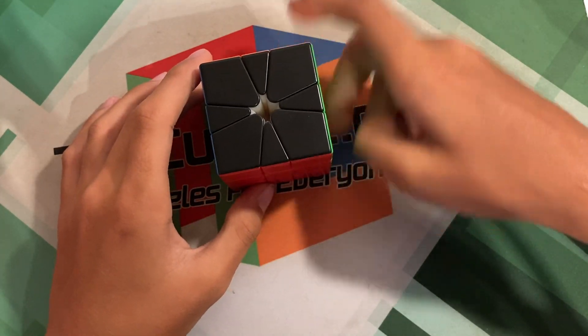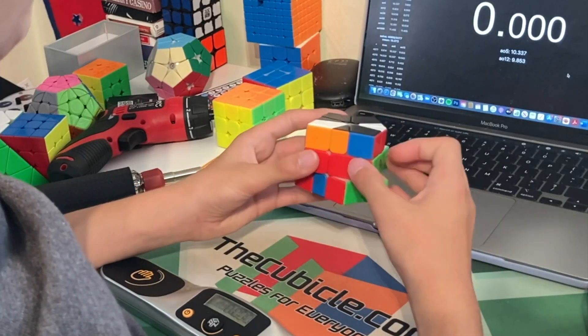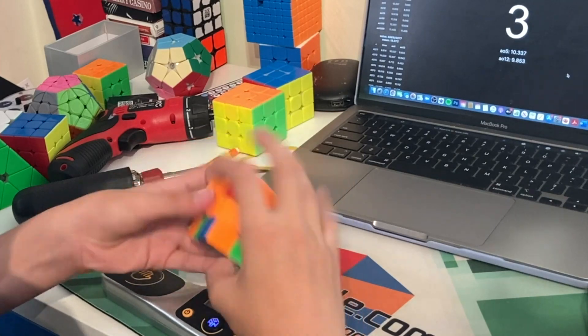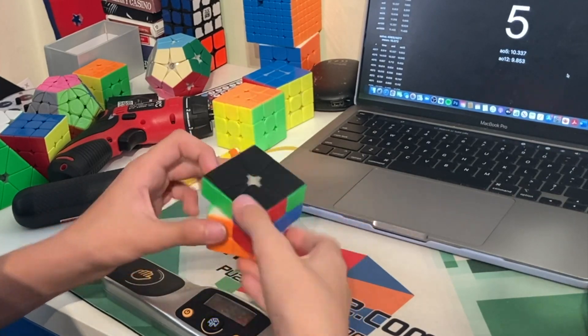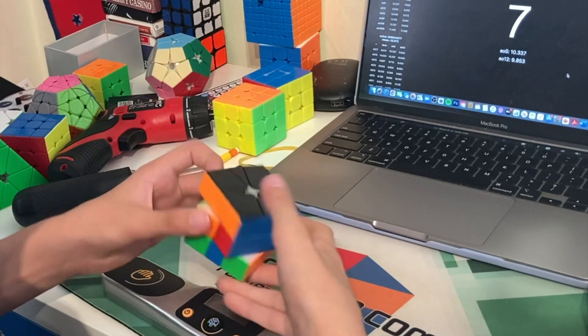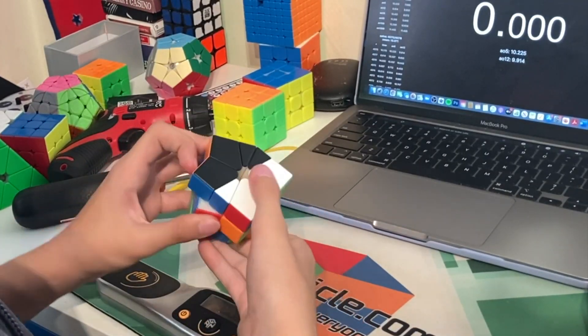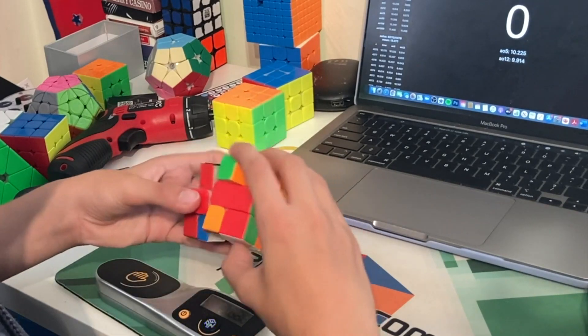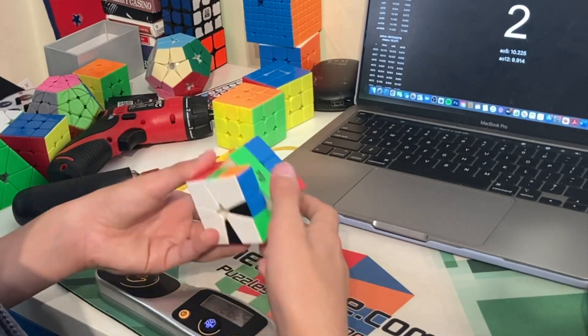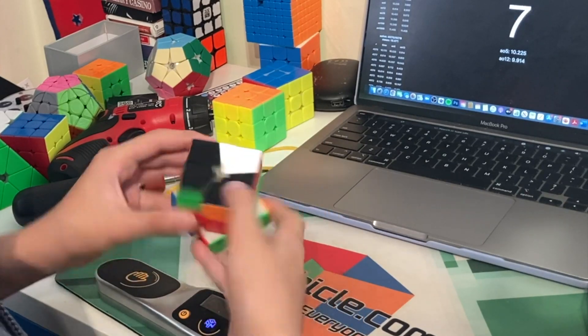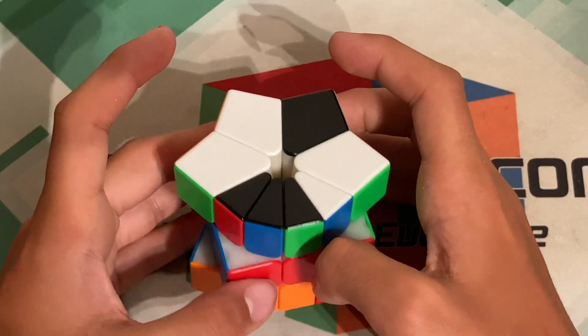And those are the steps of solving a square one. Now this method is called the Vandenberg method, and it is the most commonly used method among top solvers. This is the method I recommend you learn, as it is the easiest to comprehend and in my opinion the best. Now the tutorial I suggest you learn how to solve a square one from is either Tingman's tutorial or Cubemaster's tutorial. They both outline the steps very well, and with Sam Fang being a world-class square one solver, he has very good advice on this event.